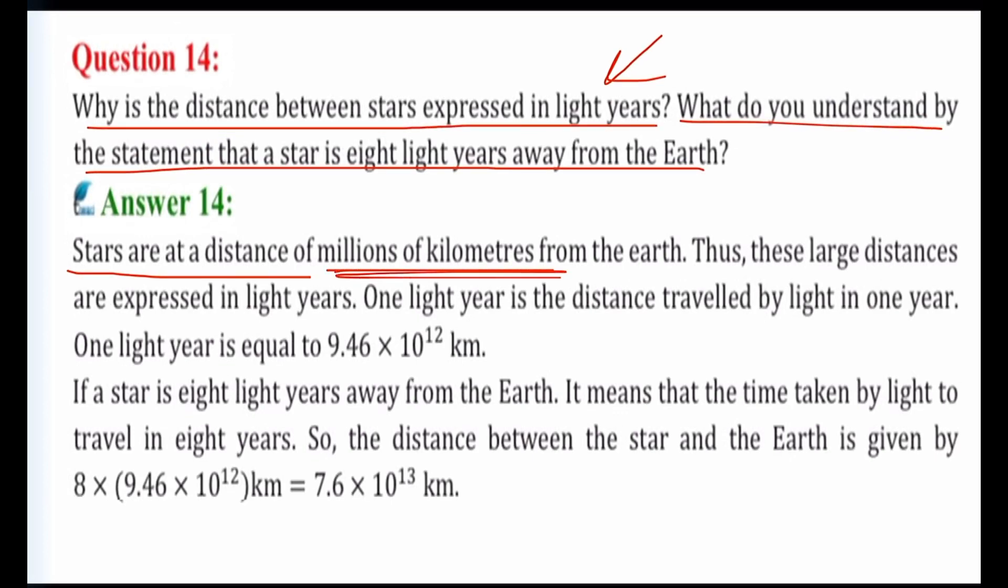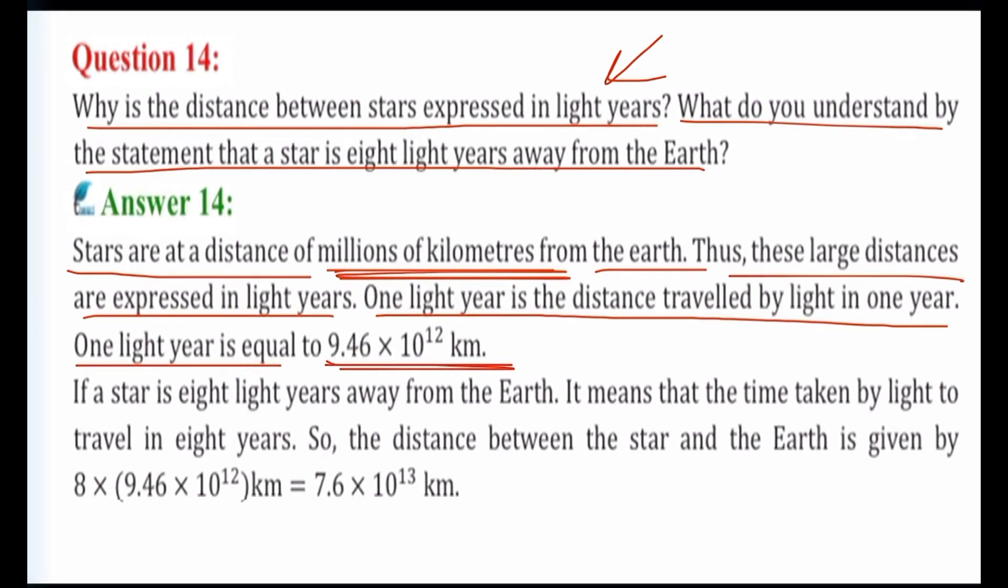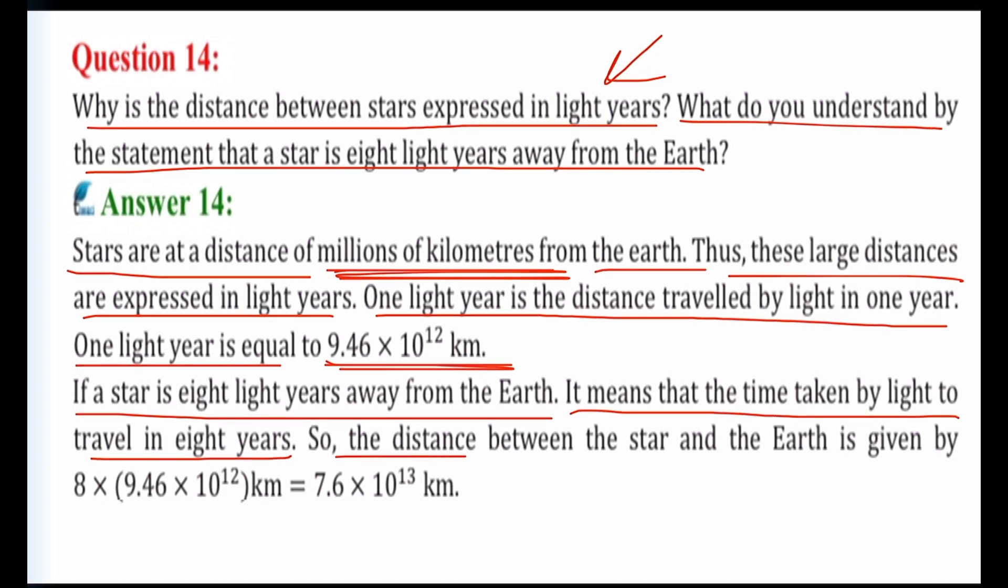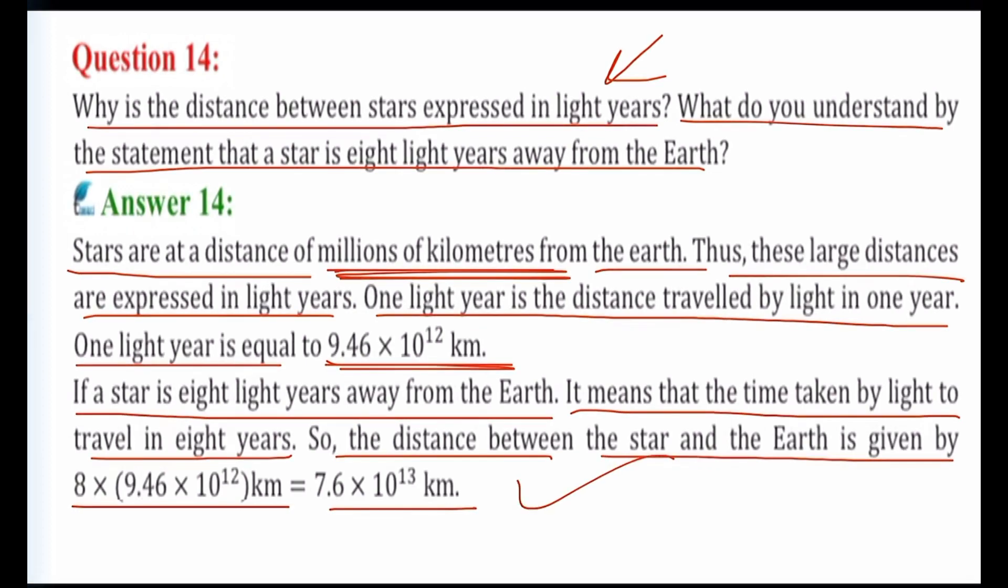Stars are at a distance of millions of kilometers from the Earth. Thus, these large distances are expressed in light years. One light year is the distance traveled by light in one year. One light year is equal to 9.46 × 10^12 kilometers. If a star is eight light years away from the Earth, it means that the time taken by light to travel in eight years. So the distance between the star and the Earth is given by 8 × 9.46 × 10^12 kilometers, that is equal to 7.6 × 10^13 kilometers.